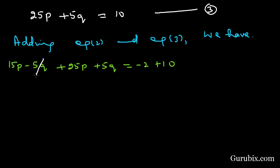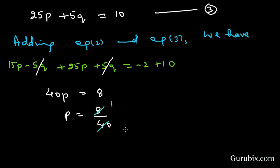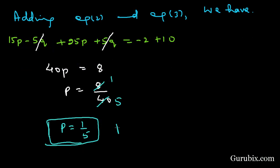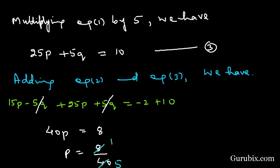We can cancel out minus 5q and plus 5q. This gives 40p equals 8, which means p equals 8 over 40. Simplifying — 8 divides into 40 five times — so p equals 1 over 5. Now we shall substitute this value into equation number 3 to find q.